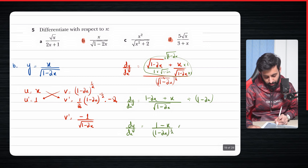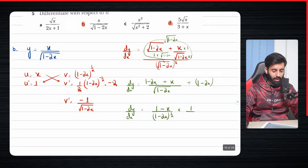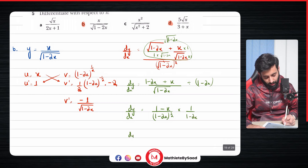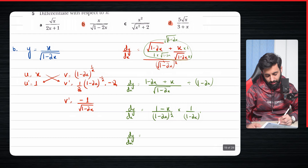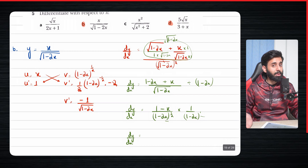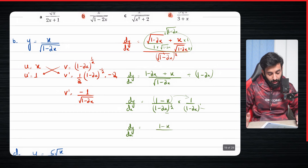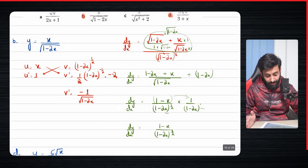So dy by dx equals 1 minus x over 1 minus 2x to the power half. When we change division by 1 minus 2x to multiplication, we reciprocate it to get 1 over 1 minus 2x. Since they share the same base, we add the powers: half plus 1 equals 3 over 2. So the final answer is 1 minus x over 1 minus 2x to the power 3 over 2.